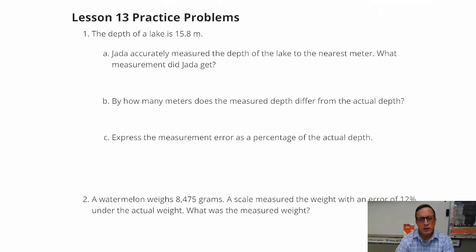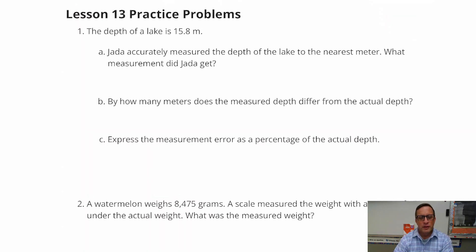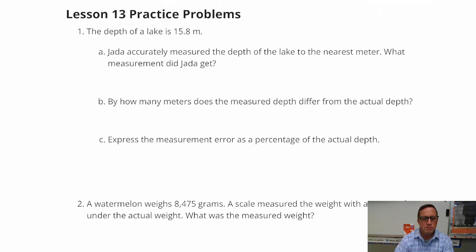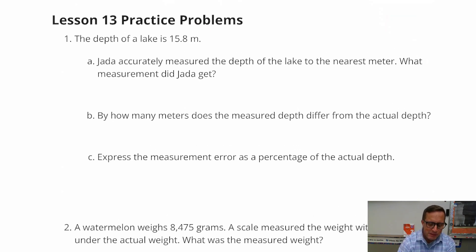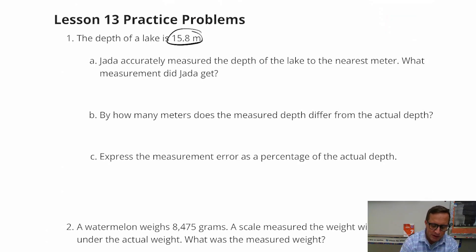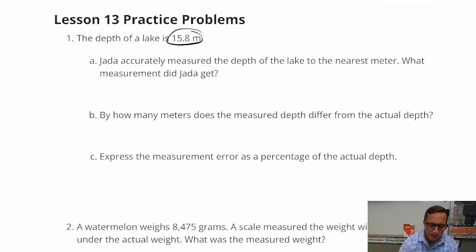For lesson 13, number one, the depth of a lake is 15.8 meters. Jada accurately measured the depth of the lake to the nearest meter. What measurement did Jada get? If she's measuring to the nearest meter, she probably doesn't have that kind of precision where it's 15.8, so she probably got 16 meters.